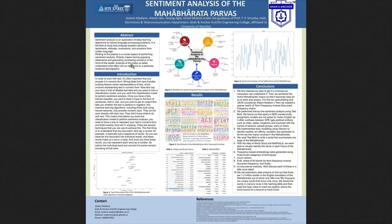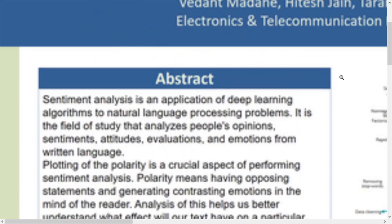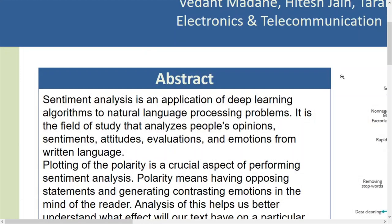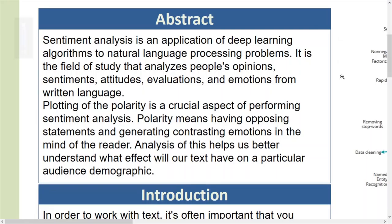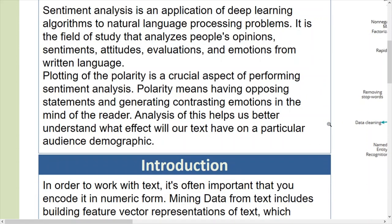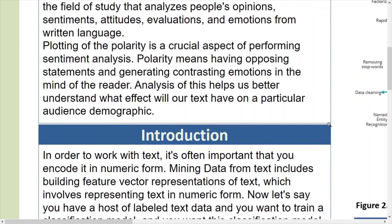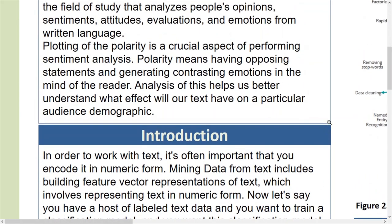This is our poster. We will start with the abstract. A wide range of emotions have been covered in the Mahabharata, and we are seeing whether we can write a program that would catch those emotions — when they change and how quickly they change from one end to the other. Our domain is NLP, which stands for Natural Language Processing. We will be dealing with written text data. Polarity is how quickly the sentiments change from one end to another.